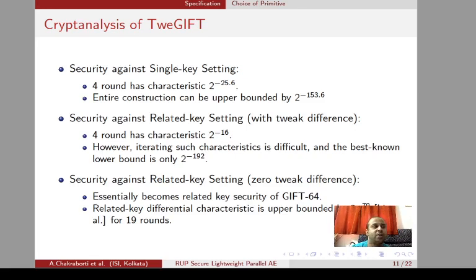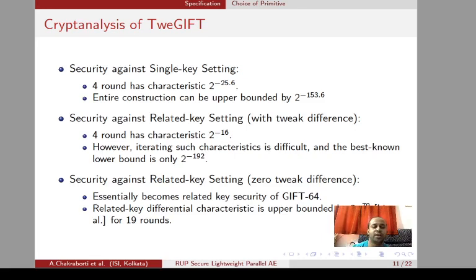We compute the characteristic for each core and found that in the related-key setting each core has a characteristic of 2^{-16}. With six consecutive cores we get an upper bound of 2^{-96} on the characteristic. The best known lower bound is 2^{-192}, so the actual characteristic lies between 2^{-96} and 2^{-192}. For the single-key setting, one core has a characteristic of 2^{-25.6}, so six consecutive cores yield 2^{-153.6}, which is already more than 128 bits. This is the overall cryptanalytic result on TweGIFT.